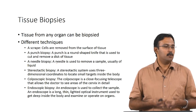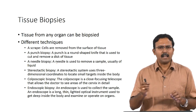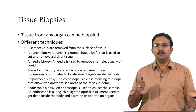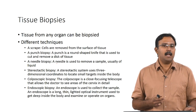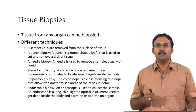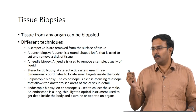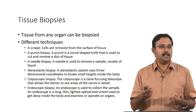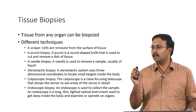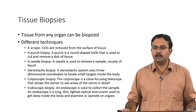Another technique is tissue biopsies — tissues from almost any organ can be biopsied. You basically take a piece of the tissue and use it for your cell isolation. A scrape removes cells from the surface of a tissue. A punch biopsy uses a round-shaped punch to cut and remove a disc of tissue. This disc-shaped tissue can be harvested and processed further to get the desired cells.